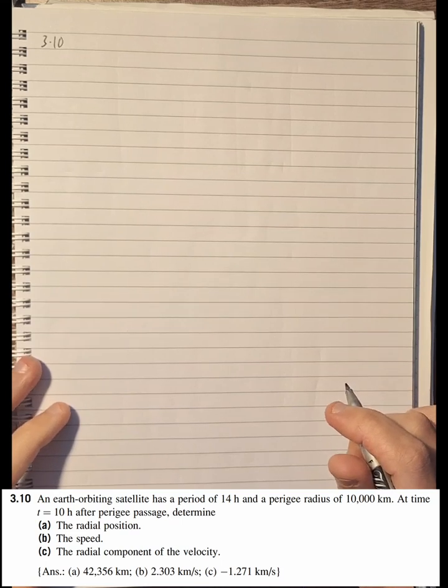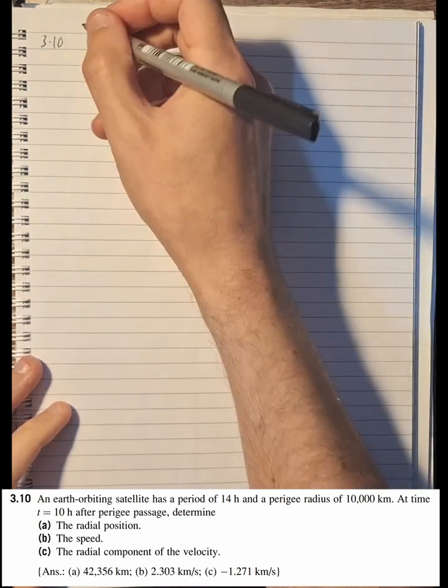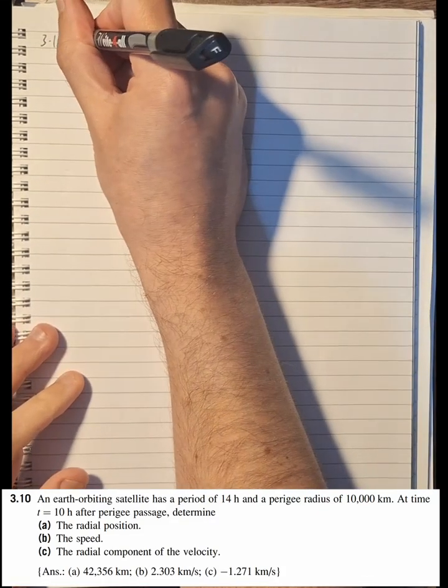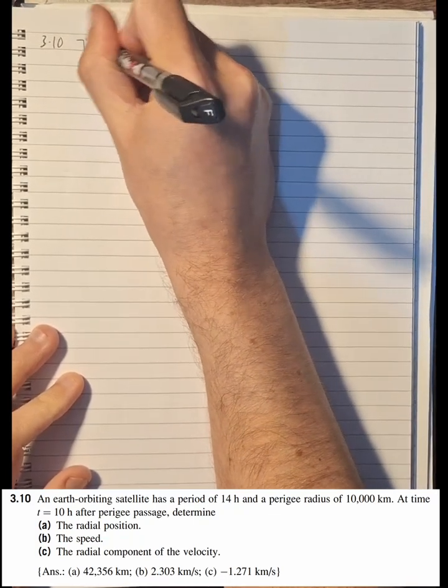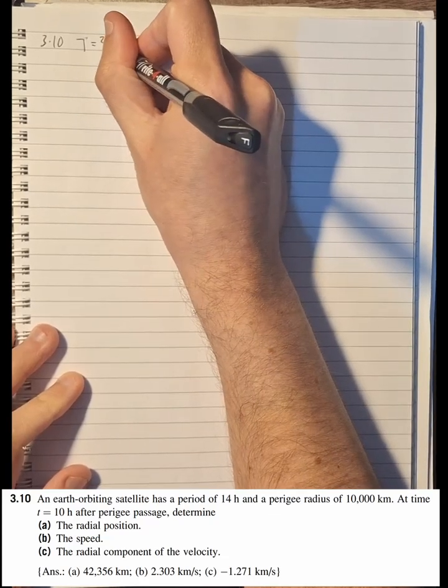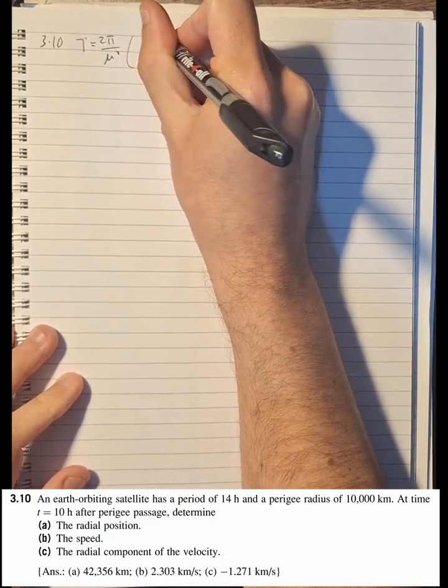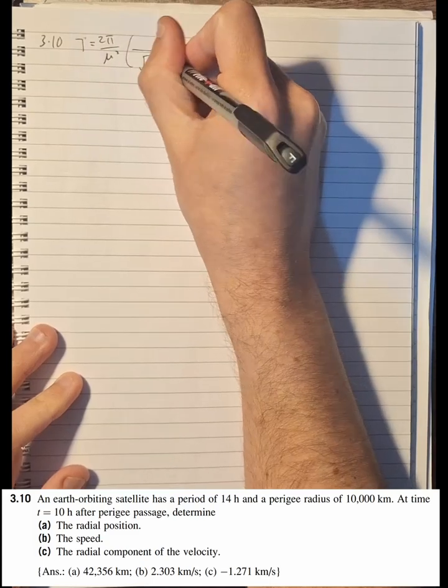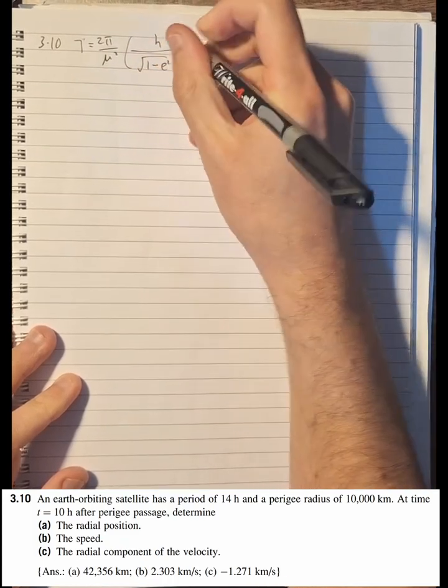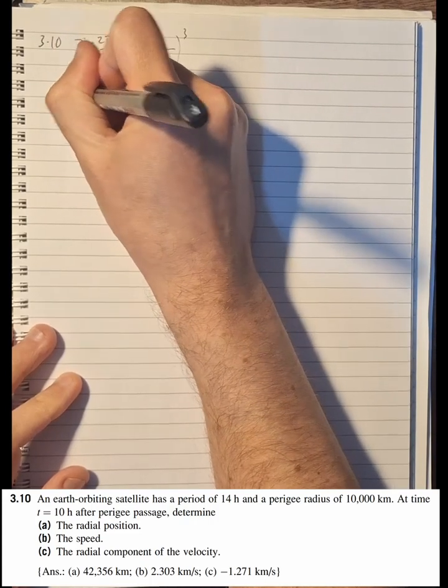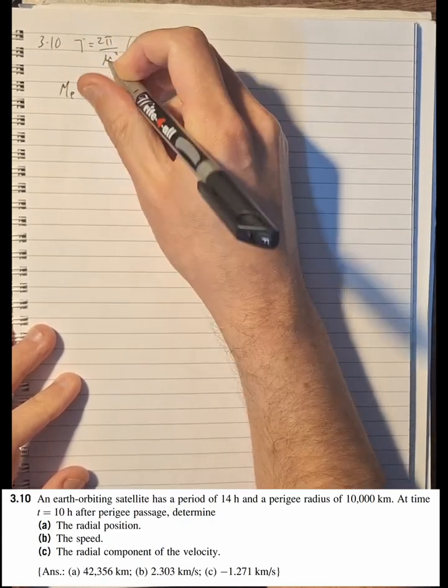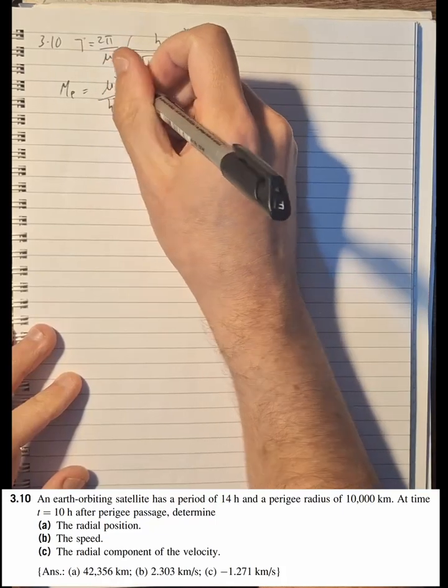So to start off, we have the equation: T = 2π/√μ × (h²/μ²)/(1-e²) all cubed. And we also have the mean anomaly M_e = (μ²/h³) × (1-e²)^(3/2) × t.